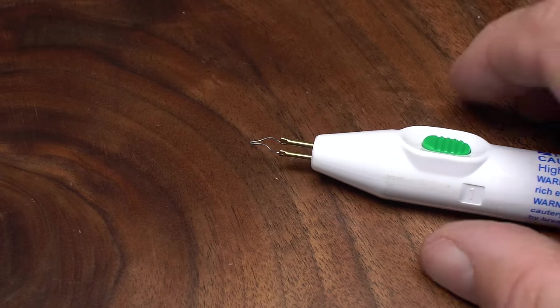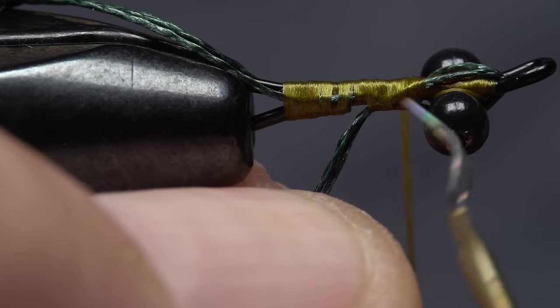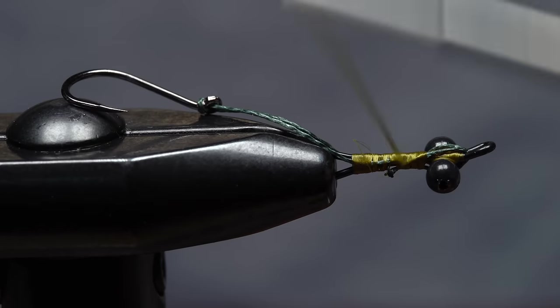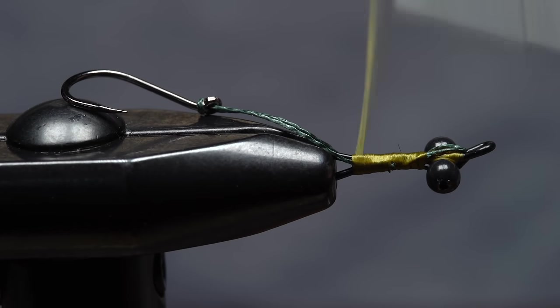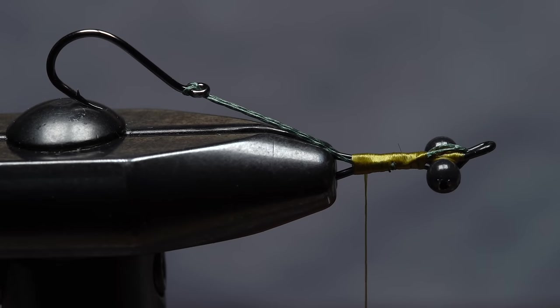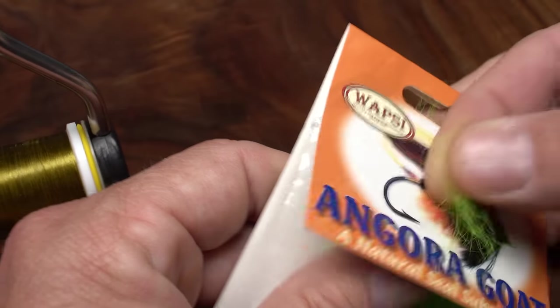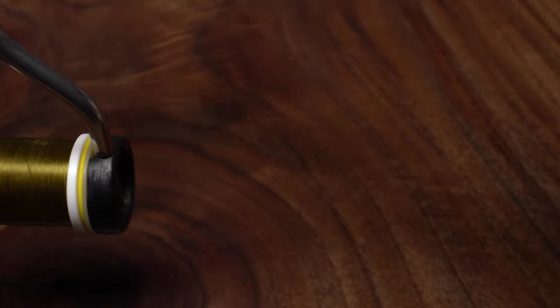Here again I'm going to use the cauterizing tool to trim the excess braid off close, doing my best not to melt everything down in the process. Then take wraps rearward to the shank's back eye. Fluorescent green angora goat is used to create a hot spot butt on the fly. A small clump is all you need.